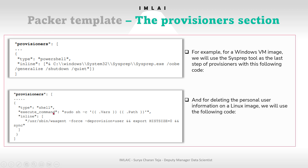For deleting personal user information on a Linux image, we use the following code: type shell, and then execute command. Instead of shell, you can also use Puppet or Chef. The inline execute command uses sudo — this is the command to delete personal user information on a Linux image.